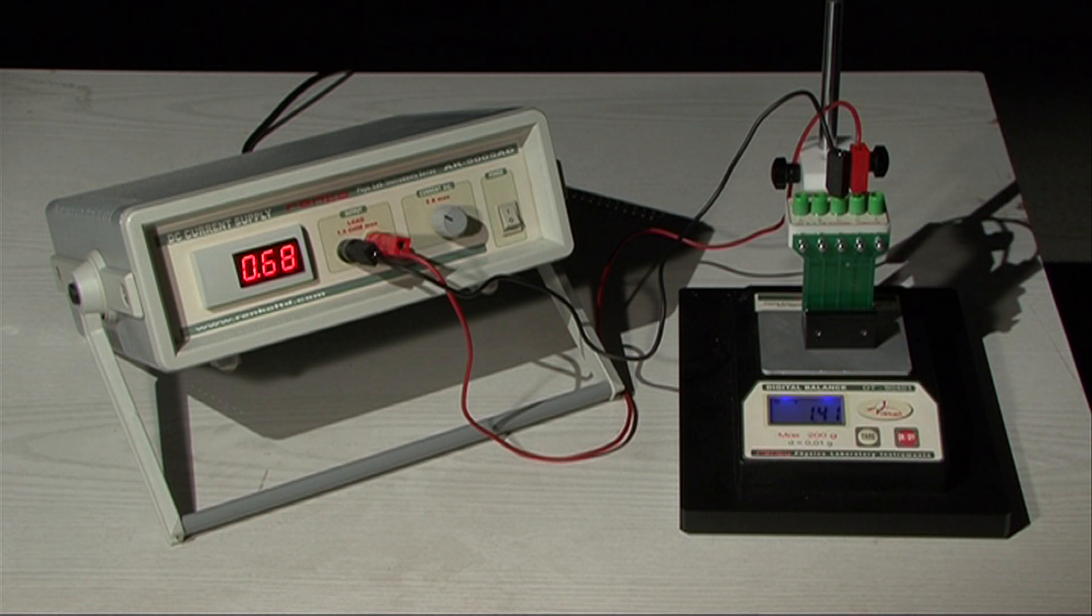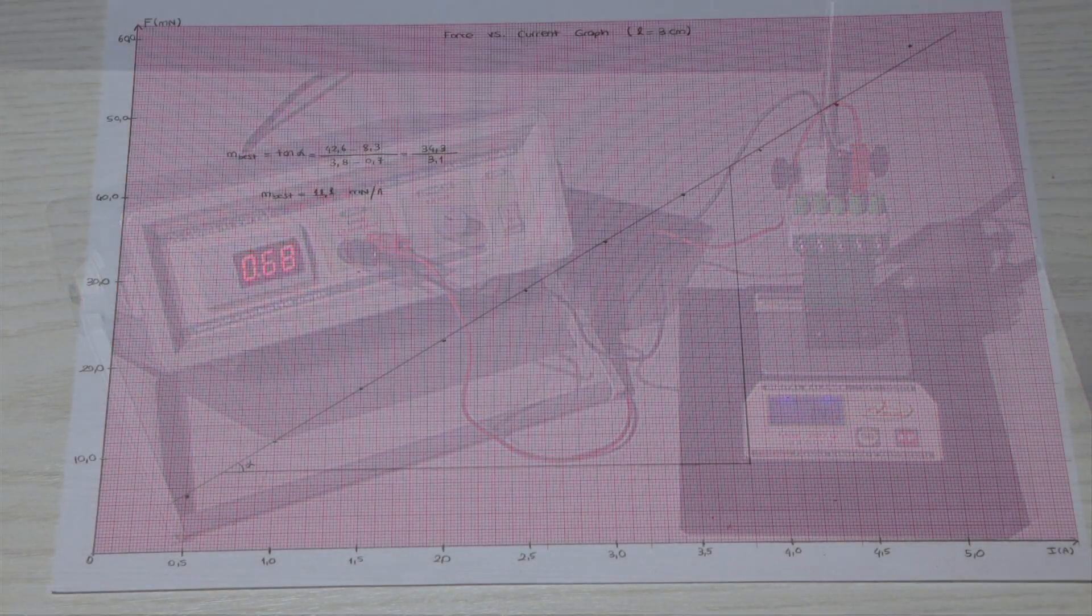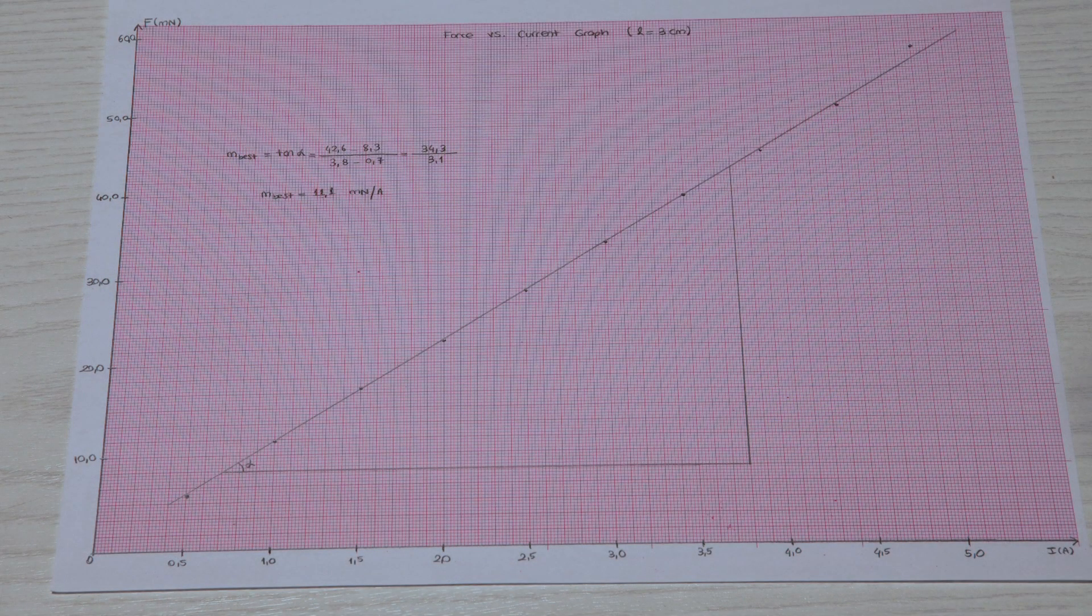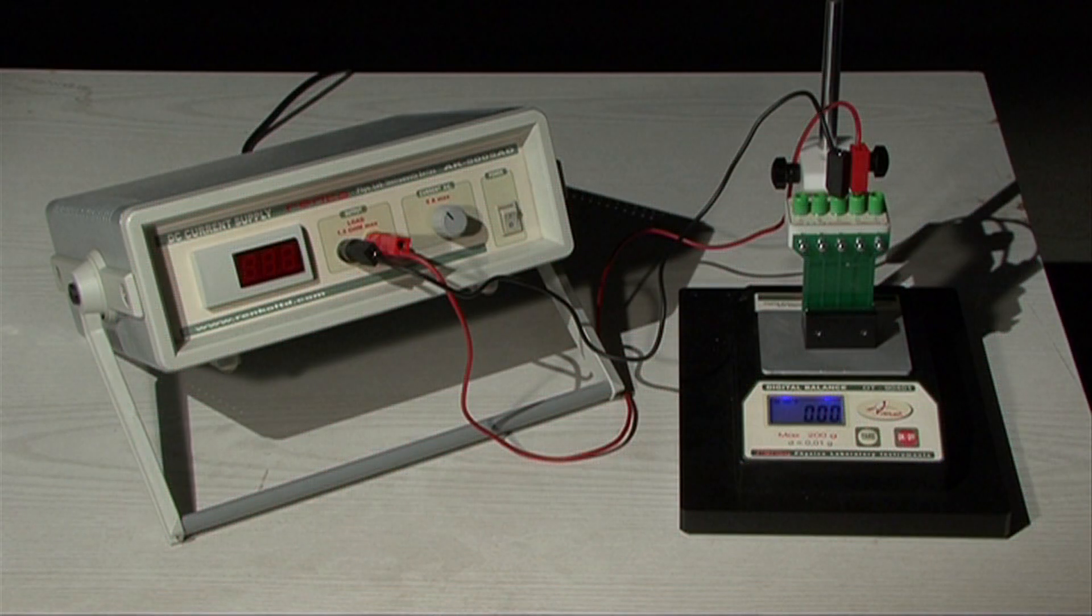After recording sufficient data, plot your data placing current on the horizontal axis and force on the vertical axis respectively. The theoretical expectation is that the slope of the best line is equal to the field strength times the length of the wire. Since the length is known, you can calculate the field strength using this slope.